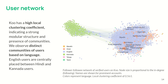Next, we study the user network on the platform. We find that Khoo has a high local clustering coefficient, indicating a strong modular structure and the presence of various communities. When we draw a follow-following network of the verified users on Khoo, we find distinct clusters in terms of language — here is a cluster of Kannada users and here is a cluster of English users interspersed with some Hindi users.